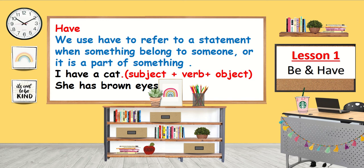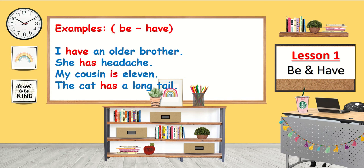She has brown eyes. We have some examples for 'be' and 'have': I have an older brother. She has a headache. My cousin is 11. The cat has a long tail.